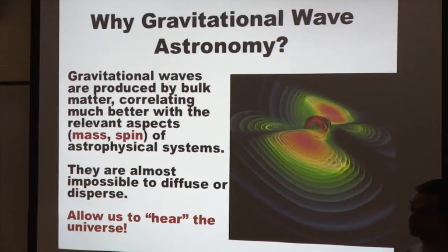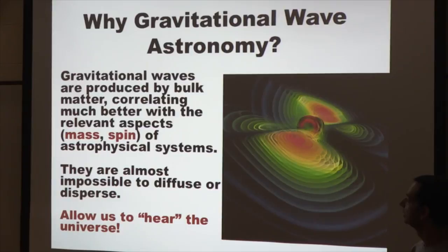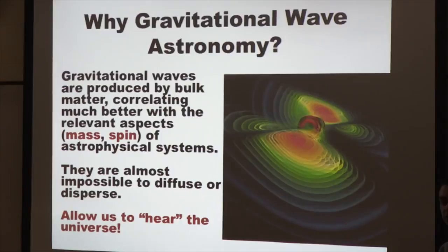Coming back to the original question: why use gravitational waves to do astronomy instead of just light? First, gravitational waves are produced by the bulk properties of the system. They can directly tell you a system's mass, spin, size, and so on — bulk information that is difficult to extract from light-based astronomy.